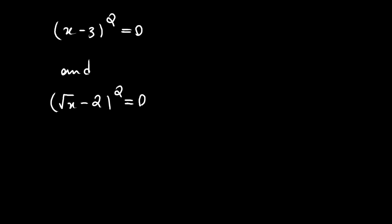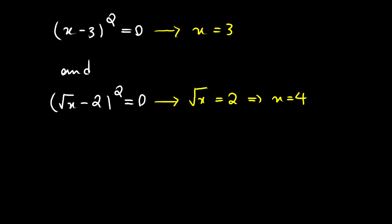From the first equation, x minus 3 all squared equals 0, we get x equals 3. From the second equation, square root of x minus 2 all squared equals 0, we get square root of x equals 2, which gives x equals 4. So you might think we have two solutions for our equation.